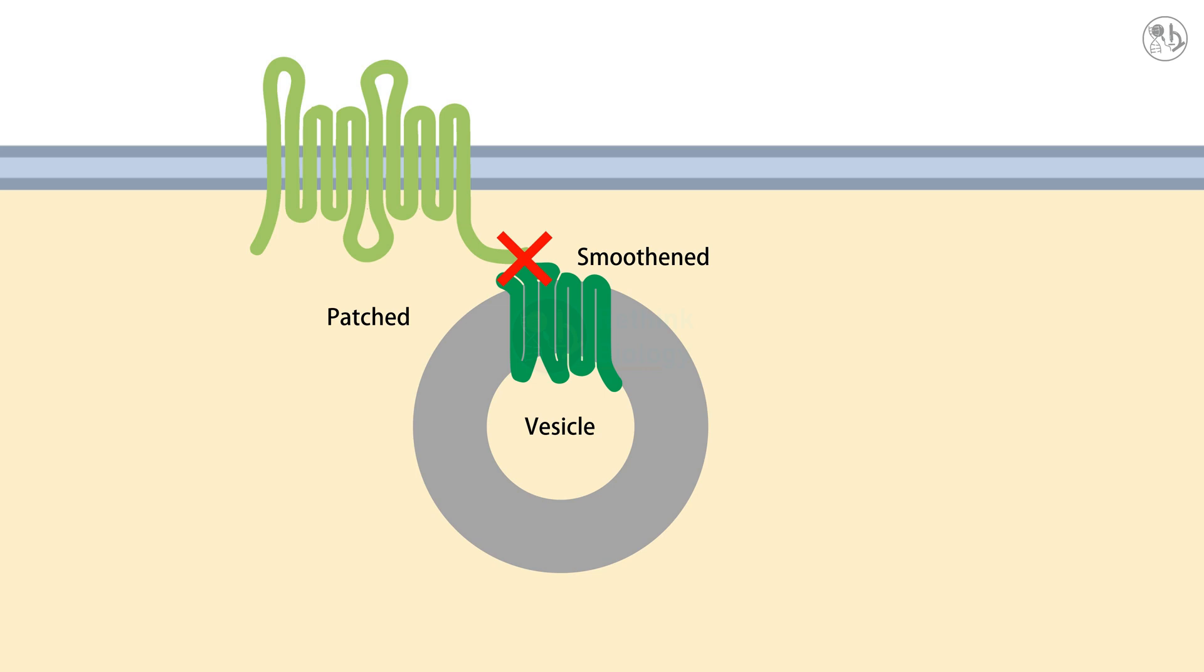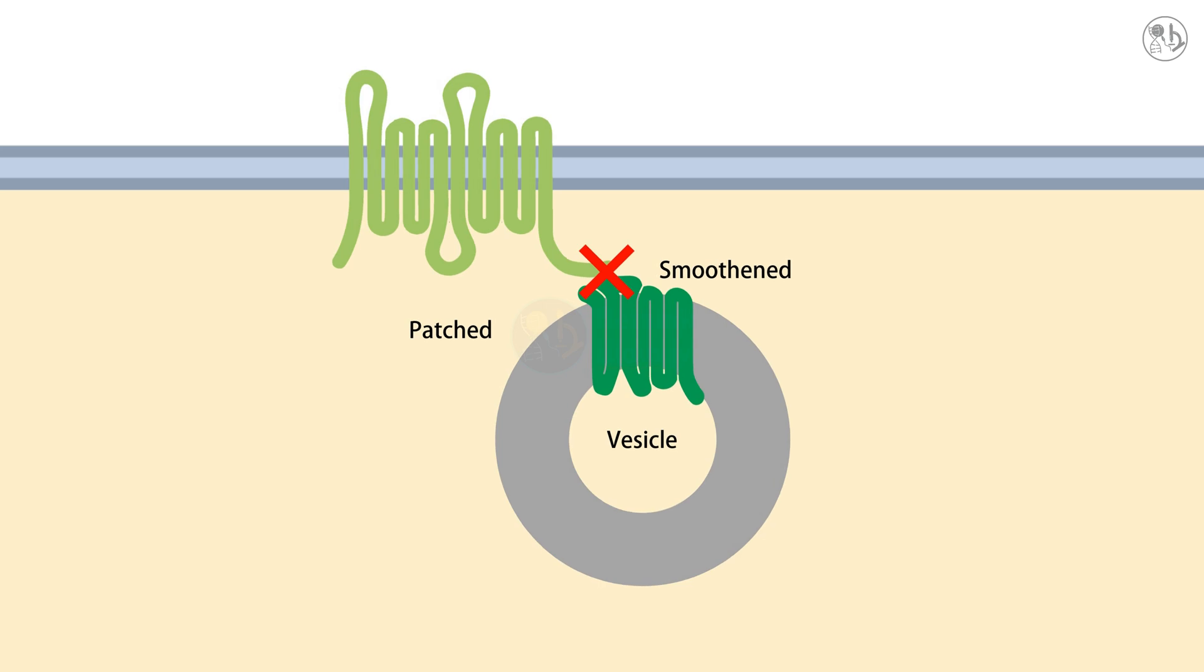Now, let's see what happens when there is a Hedgehog signal. Hedgehog is a secreted protein that binds to patched and another coreceptor called IHOG on the cell surface. This removes the inhibition of smoothened by patched.